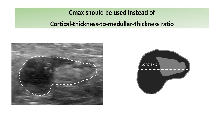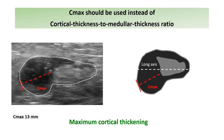In such cases, instead of the ratio, attention should be paid to the maximum cortical thickening — the Cmax — measured from the corticomedullary interface perpendicular to the nodal outer contour. The cut-off of Cmax that may be predictive for metastatic lymph nodes needs to be defined in the future.